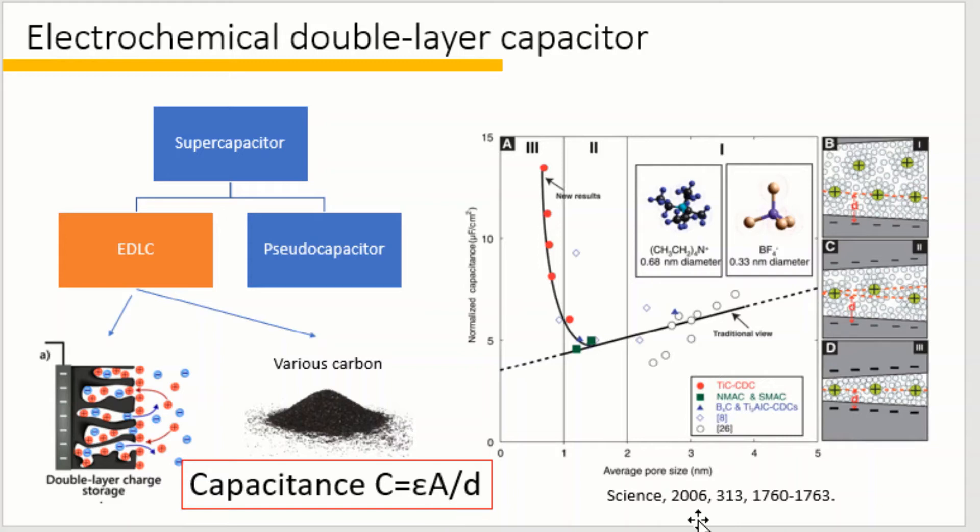In 2006, Gogotsi's group finds that the pore size of the material plays a key role in determining the capacitance. They find that the capacitance increases dramatically when the pore size is less than one nanometer.